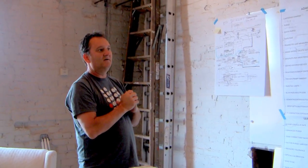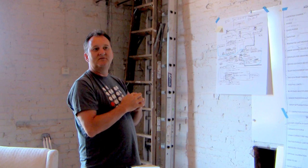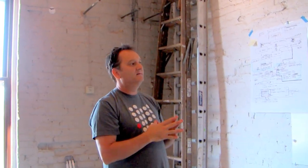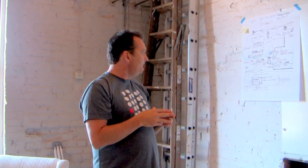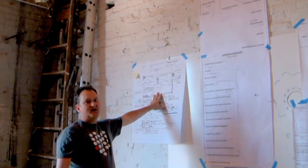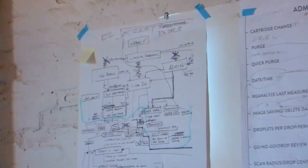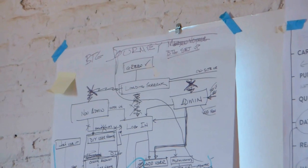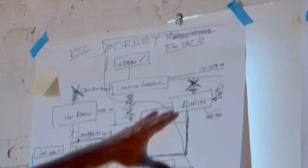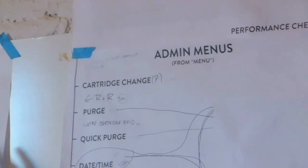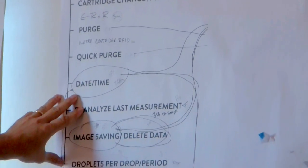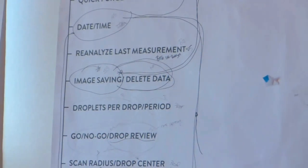Our process for developing a user interface really starts out at an understanding phase where we go through the complete user manual of the current product that's out, and then we start to look at what's all there. From that we basically sketch out what we're finding and what we try to do is organize this into clusters. In this phase we've taken this information and started to work it out, clean it up, and show what exactly is there.